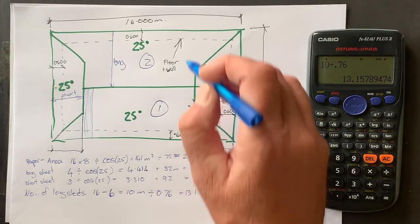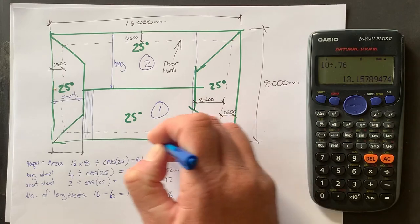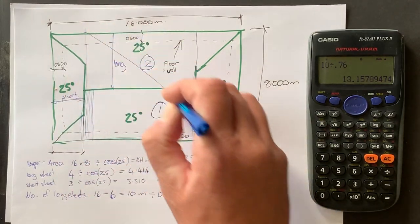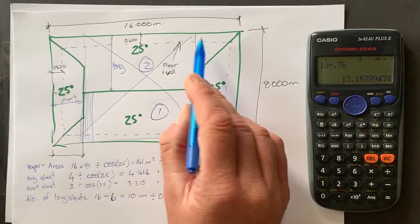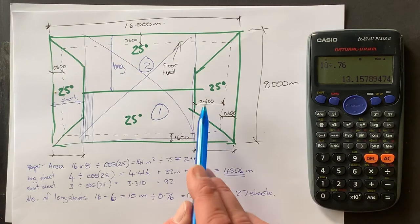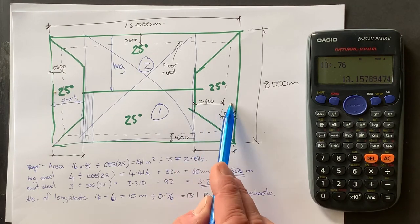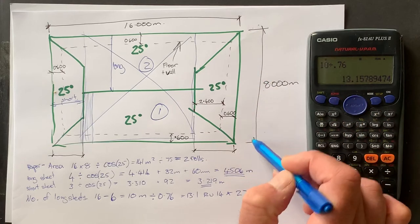All right. Now the short sheets, so that would do that whole area from there to there. So that's that area there done. So the only area we've got is a short one.